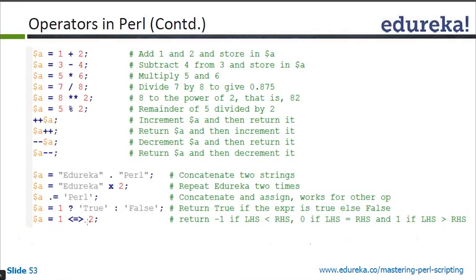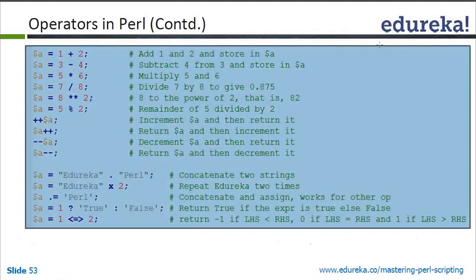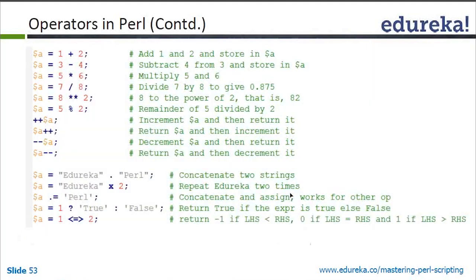The spaceship operator (<=>) returns: minus 1 if left is less than right, 0 if left equals right, and 1 if left is greater than right. For the double-star exponentiation example: dollar equals 8 double-star 2, which is 8 squared equals 64. There appears to be a typo in the slide — it should read 8 to the power of 2 equals 64. The double-star is the exponent operator.